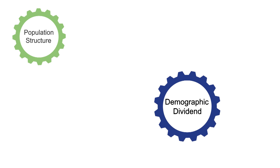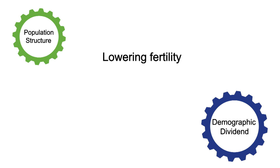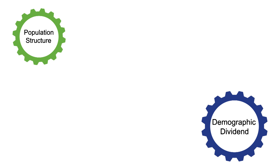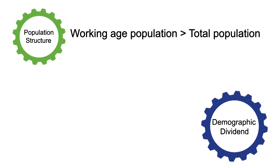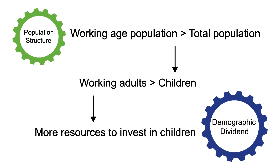So what gets the gears moving toward a demographic dividend? First of all, it's a change in the age structure of a population, and without this fundamental step, a dividend won't be realized. By lowering fertility through family planning — women having fewer children — the population's average age goes up. As fertility remains low, the size of the working age population grows relative to the total population. As a result, there are more adults working in the labor force per child, and that means there are more resources available to invest in the health, education, nutrition, and well-being of children.